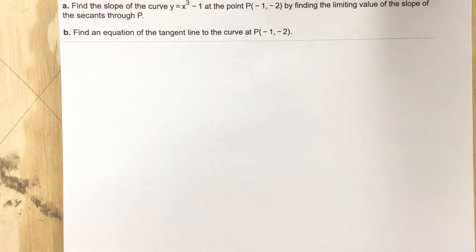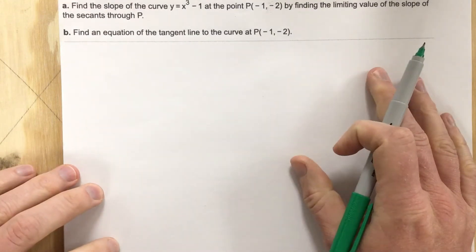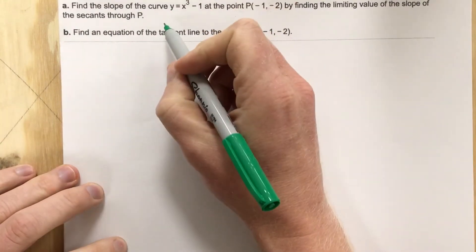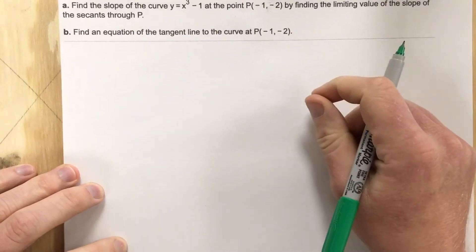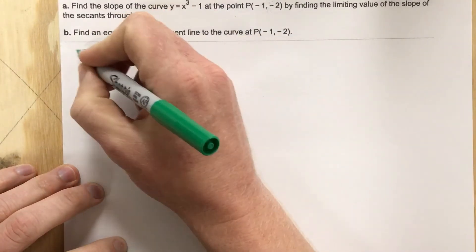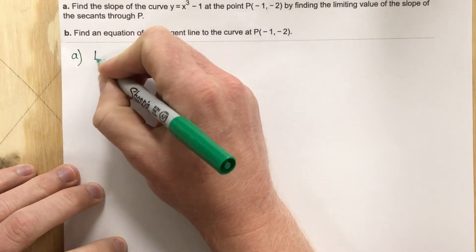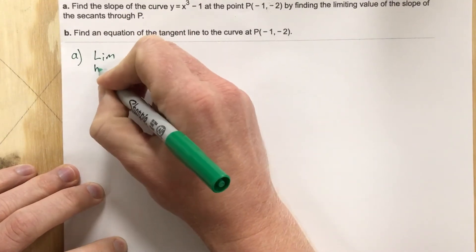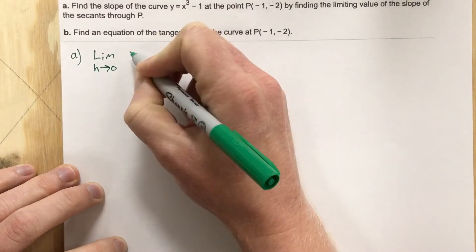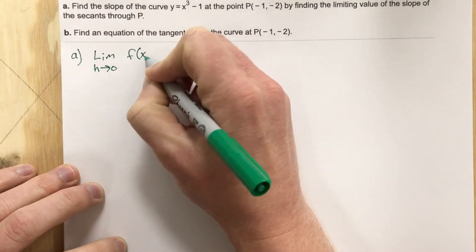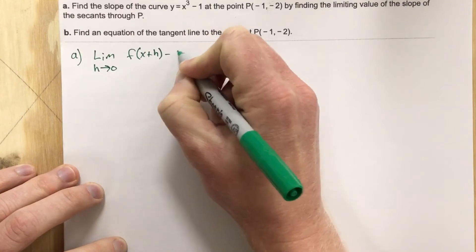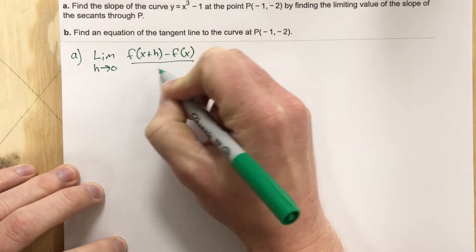We've done many problems like these before. They're wanting us to use the definition of finding slope with a limit, so for part A they want us to find the limit as h approaches 0 of f of x plus h minus f of x all over h.